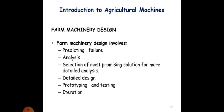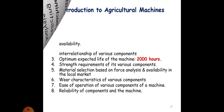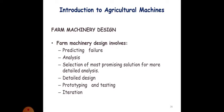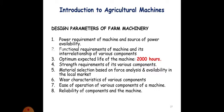When designing farm machinery, the design involves predicting the failure, analysis, selection of most promising solution for more detailed analysis, detailed design, prototyping and testing, iterations, availability of power requirement and sources of power, functional requirements of the machine, interrelationship of various components, optimum expected life of the machine that is approximately 2000 hours, strength requirements of the various components, material selection based on force analysis and availability in local market, wear characteristics of various components, ease of operation, reliability of the components and the machine. These are the design parameters of farm machinery.